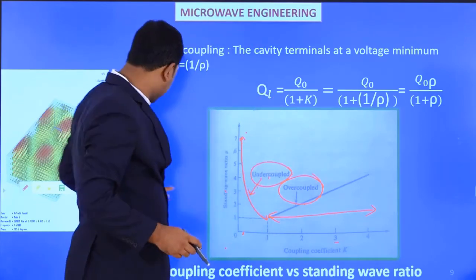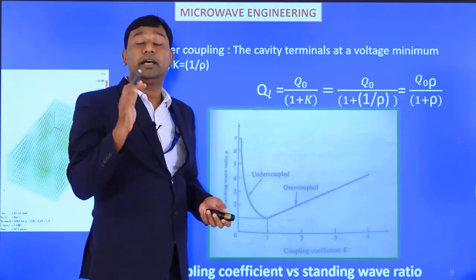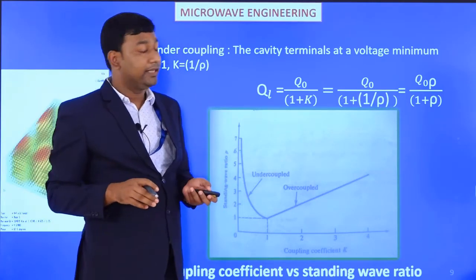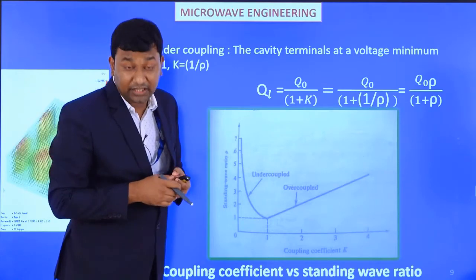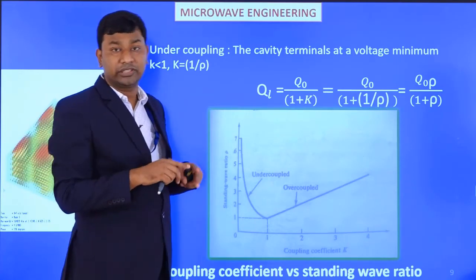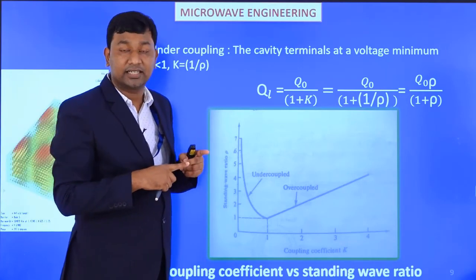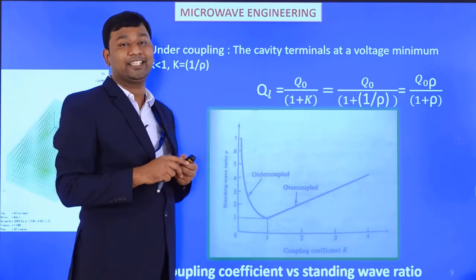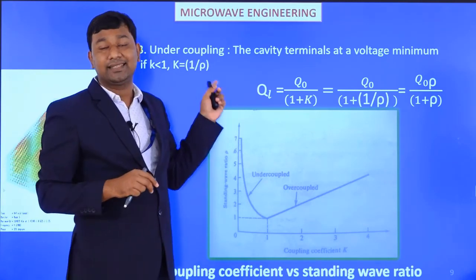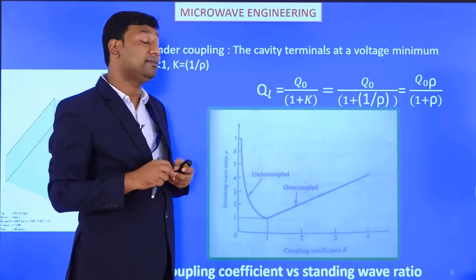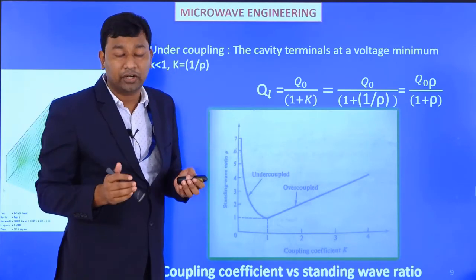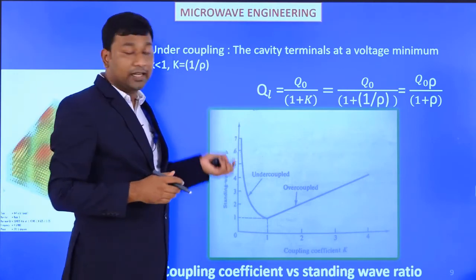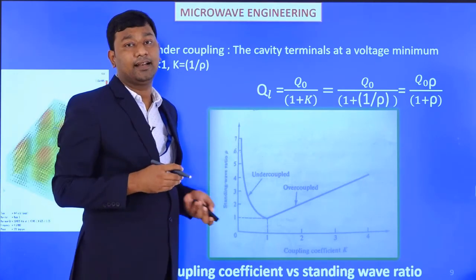This concludes the overall content of Unit 2. In Unit 2 we started from circular waveguides, then moved to cavity resonators — both rectangular and circular cavity resonators — derived their various equations, and finally in today's lecture we discussed quality factor and coupling: how coupling works and what are the different coupling conditions — under coupling, over coupling, and critical coupling where K equals 1.